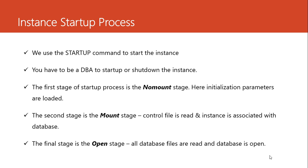Once the initialization parameter files are read with no problem, we move on to the second stage, which is the mount stage. In the mount stage, Oracle reads the control file. The control file knows everything important about the database. At the no mount stage the software is open and running. Now at the mount stage the focus is on the database, trying to open it. The control file is in charge of knowing which database to open. Without it, we are doomed — that is why we multiplex the control file.